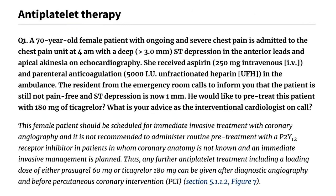Question 1. A 70-year-old female patient with ongoing and severe chest pain is admitted to the chest pain unit at 4 a.m. with a deep ST depression greater than 3.0 mm in the anterior leads and apical akinesia on echocardiography. She received aspirin 250 mg intravenous (IV) and parenteral anticoagulation — 5,000 IU unfractionated heparin (UFH) — in the ambulance.